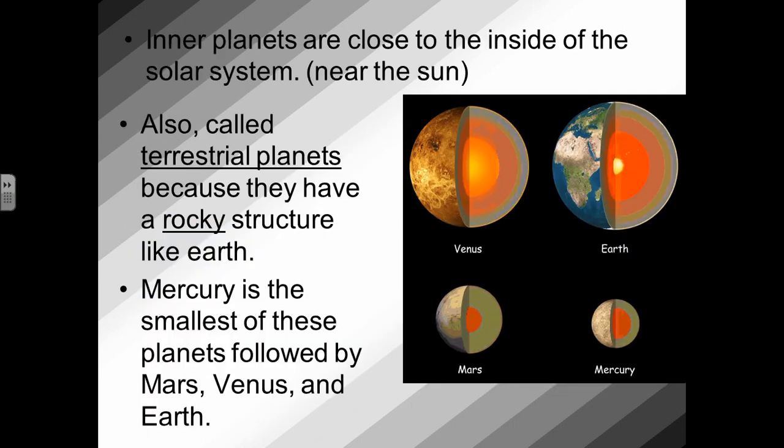Inner planets are close to the inside of the solar system, meaning they're near the sun. Inner planets are also called terrestrial planets because they have a rocky structure like Earth. If you look at the picture, you can see the layers of Earth, and you can also see that Venus, Mars, and Mercury also have similar layers to the structure of those planets. You can also see in the picture the difference in size of each planet. You can see that Mercury is the smallest of our inner planets, then Mars, Venus, and Earth is the largest.